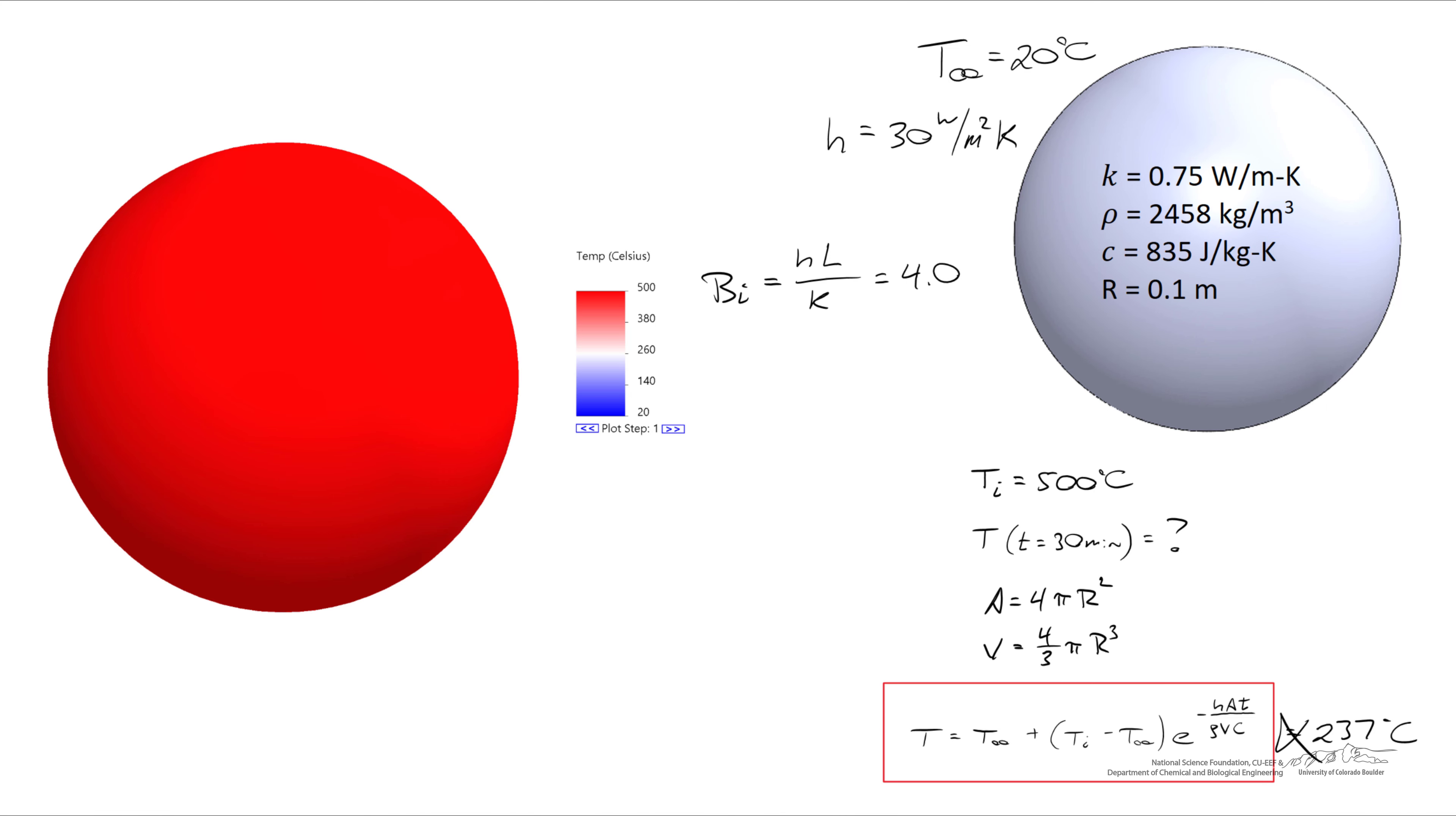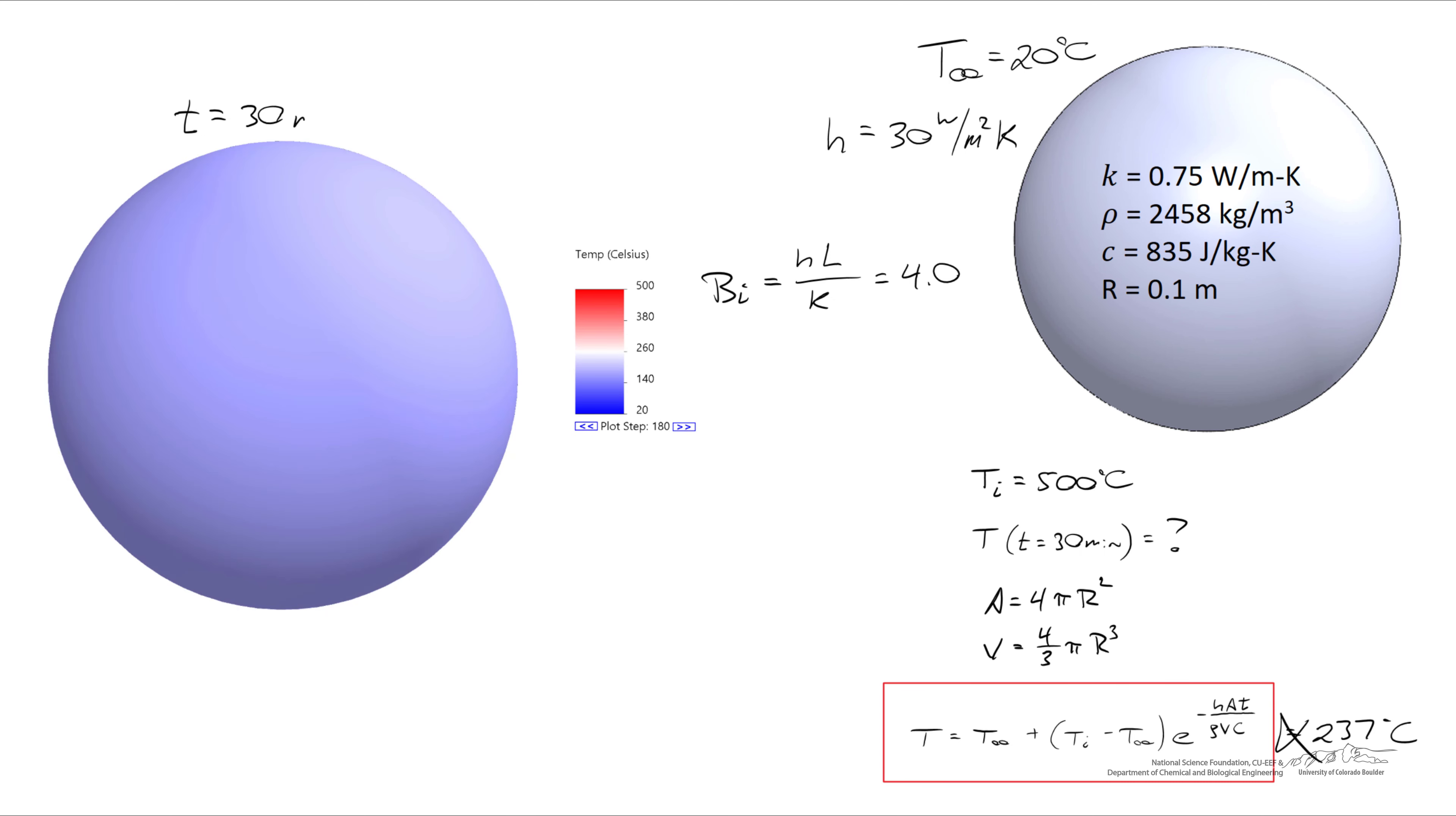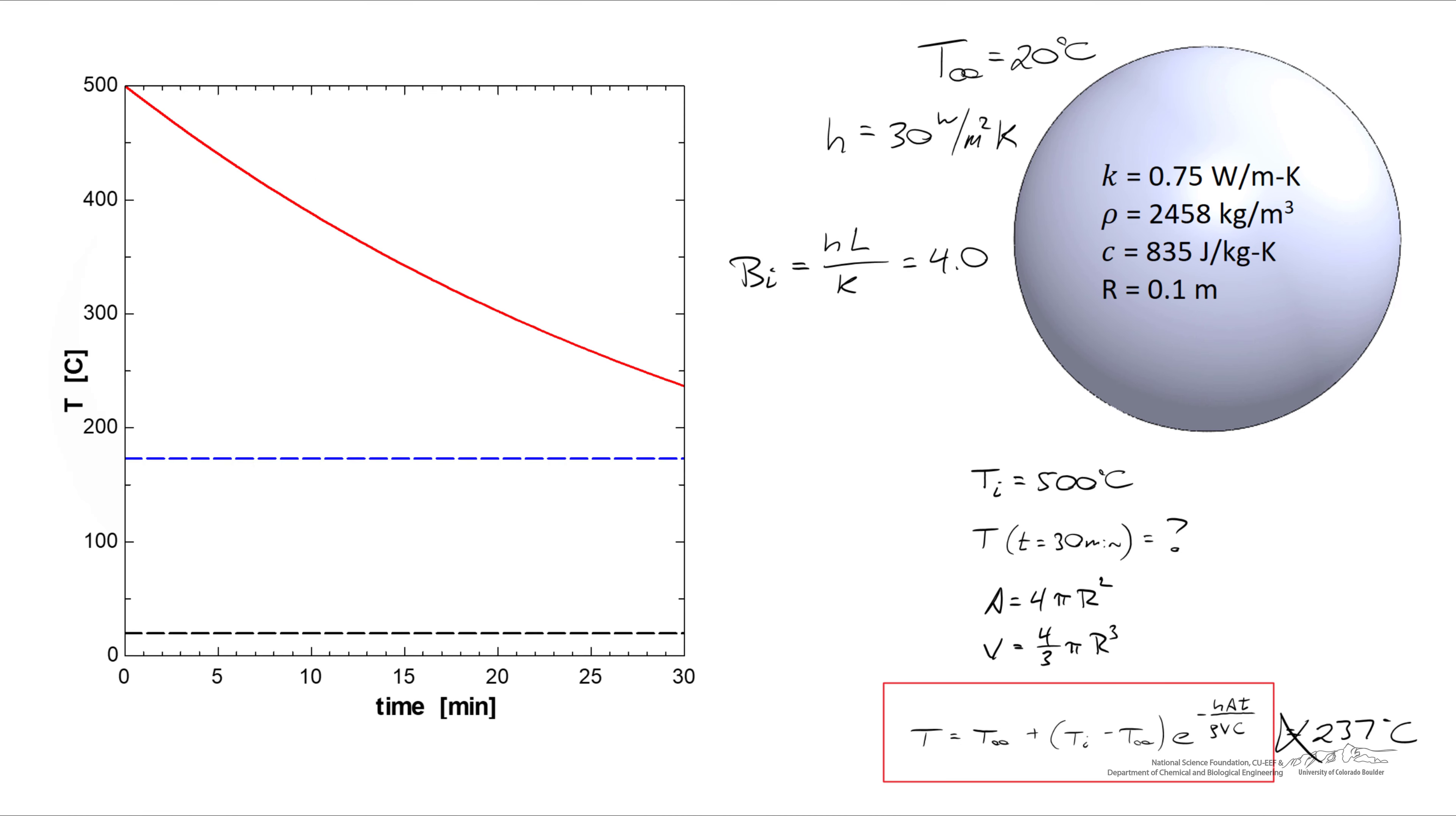So what I'm showing right now is an analysis at time equals 0 minutes, and the initial temperature I've set to 500 degrees C. Here's that simulation after 30 minutes has elapsed. We'll find that the exterior temperature is equal to 173 degrees C. Here's the original graph that I showed, which is just a plot of this equation. After 30 minutes, I've superimposed a temperature of 173 degrees C, which is what I find from my simulation.